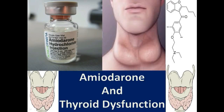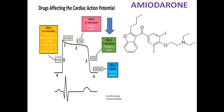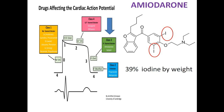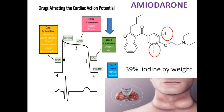In this video we'll talk about amiodarone and the thyroid dysfunction related to it. Amiodarone is a class 3 anti-arrhythmic drug whose molecule has two iodine atoms, accounting for about 39% of its weight by iodine. Due to this high iodine content and its intrinsic properties, amiodarone can cause thyroid-related dysfunction.